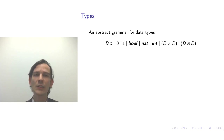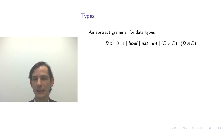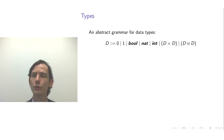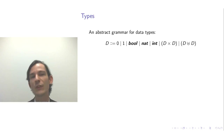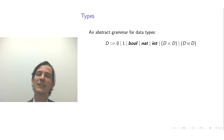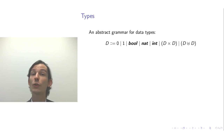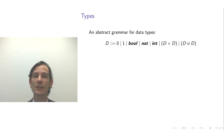As an example of an abstract grammar for data types, consider the non-terminal D. You could understand 0, 1, bool, nat, and int as the primitive types — the simple types — and D×D and D⊔D as the complex types, formed out of other data types themselves.